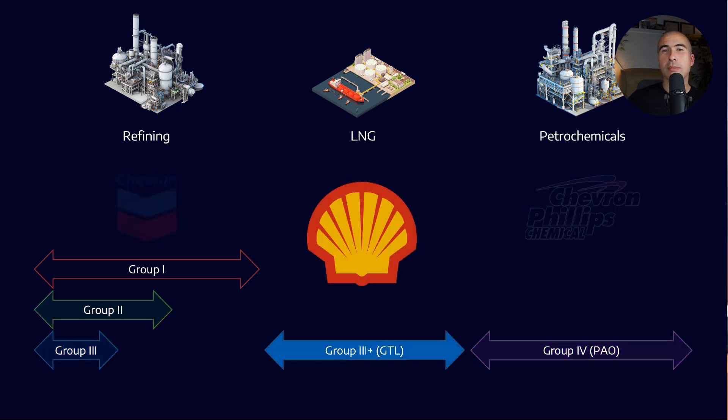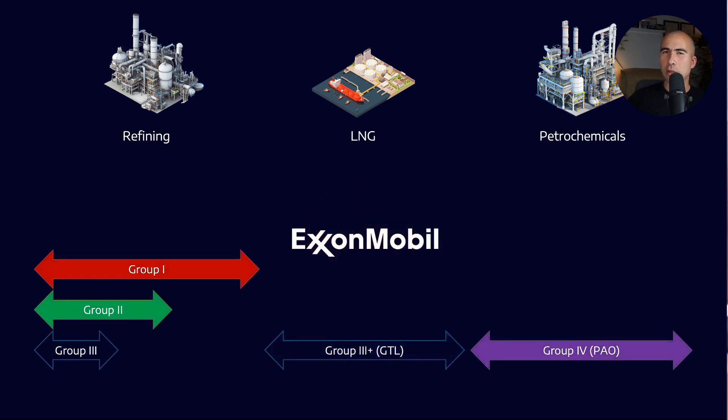Now, if you look at someone like Shell, they're most famous for the GTL product, right? So that's something that they offer. And ExxonMobil, which as far as I know, is the biggest base stock supplier in the world has Group 1 and 2. There's a gap where they don't sell any Group 3 or GTL. And then you've got the Group 4 PAOs, which they're obviously quite well known for.